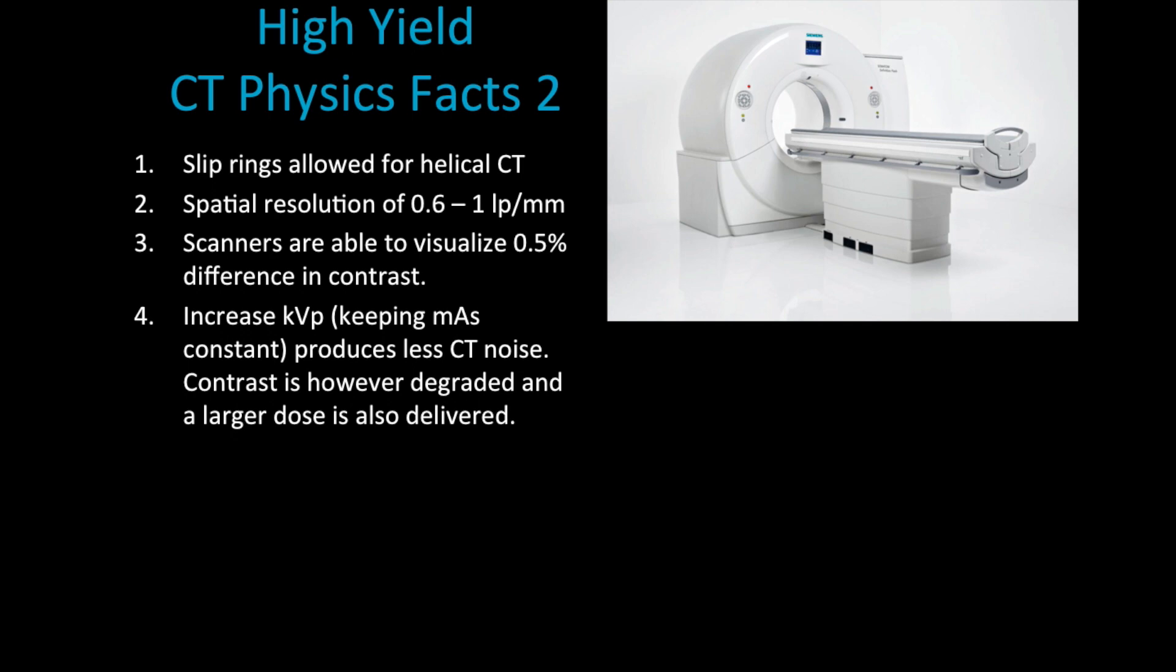When we increase mAs but we keep the kVp constant, we produce better low contrast discrimination and less CT noise. Notice that I use the low contrast discrimination term rather than low contrast resolution. They sound very similar but there are some differences. In theory, only my kVp is affecting my contrast, while my low contrast discrimination is improved because by increasing my mAs I reduce noise.